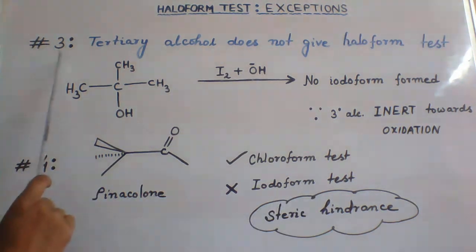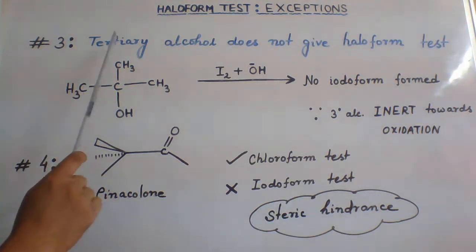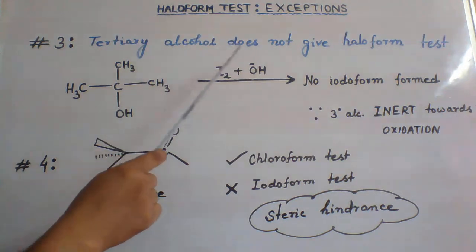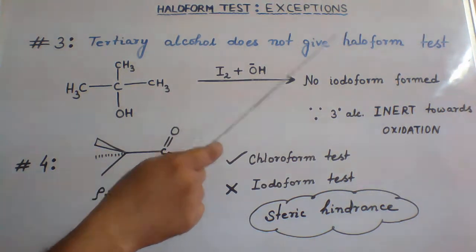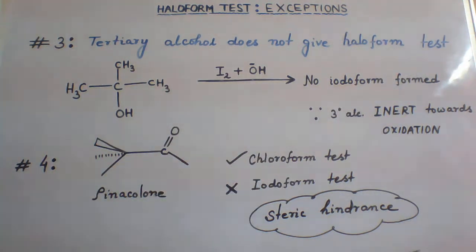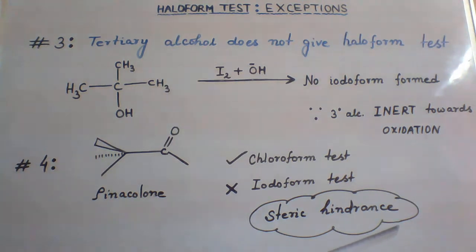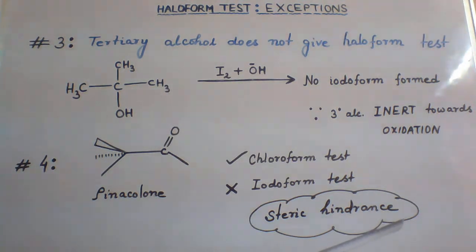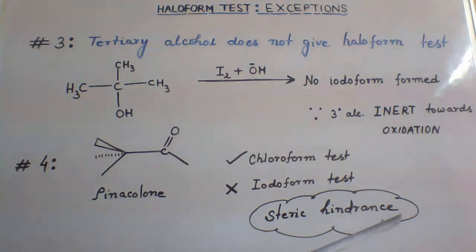Exception 3: Tertiary alcohol does not give haloform test. We know that primary and secondary alcohols can be readily oxidized, but tertiary alcohols are inert towards oxidation.